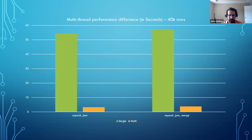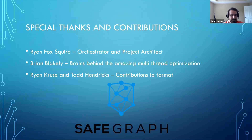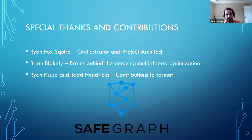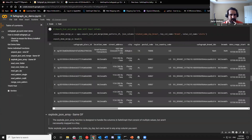This was all tested on a four-core Colab instance, just so everyone knows. Single core, we're at about 55 seconds for both the JSON merge and the regular unpack JSON. When we add multi-core, it drops all the way down to sub-five seconds, so it's a crazy fast performance increase. Special thanks to Ryan Squire for being the orchestrator and project architect, Brian Blakeley for the multi-threading, and Ryan Cruz and Todd Hendrix for their contributions.